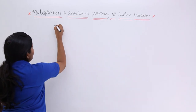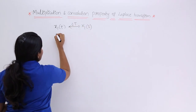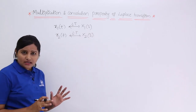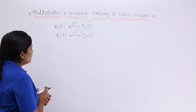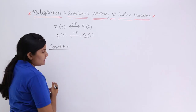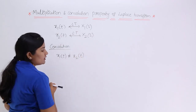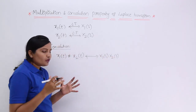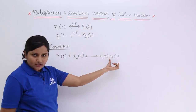I am going to consider two signals: x1 of t, for which the Laplace transform is x1 of s, and x2 of t, for which the Laplace transform is x2 of s. These two signals I am going to use to define and prove the multiplication and convolution properties. The convolution property states that convolution of signals in time domain — if you convolve these two signals in time domain — you get multiplication of their spectrums in frequency domain. That means the resultant spectrum is equivalent to multiplication of the individual spectrums.